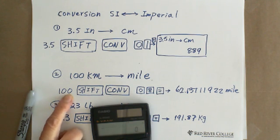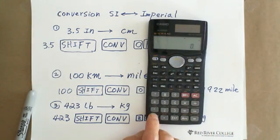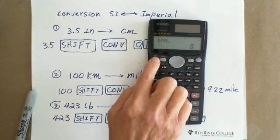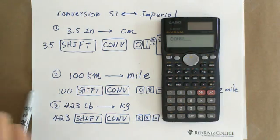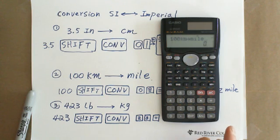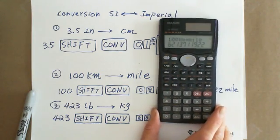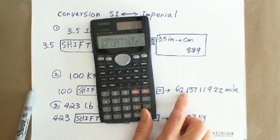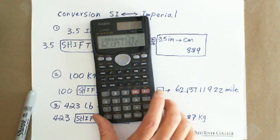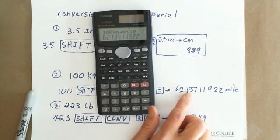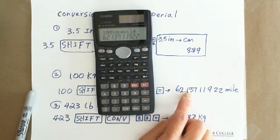So enter 100 number. You first enter the number you want to convert. 100. Shift. Conversion. And the code number 08. You can check the code number 08. And it shows you on the screen 100 kilometer and go to miles. Hit equal sign. And it shows you 62. If all the decimals are 62.137, 11922. Depends on how many decimals you need. So you can choose 62.1 if you want to keep one decimal place, or choose 62.14 if you want to choose two decimal places.